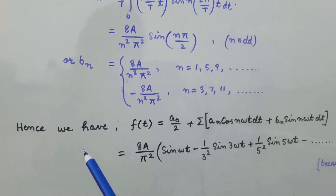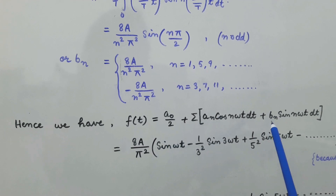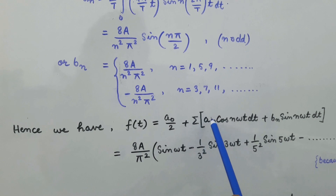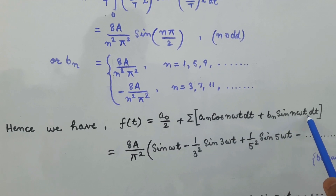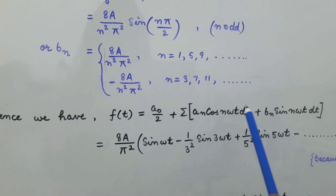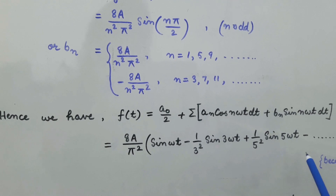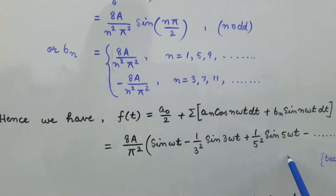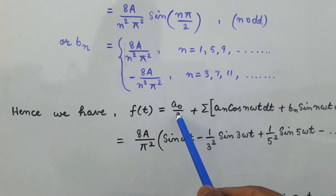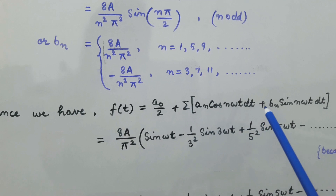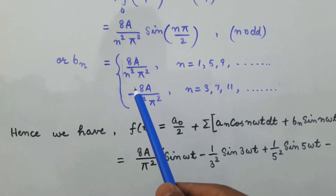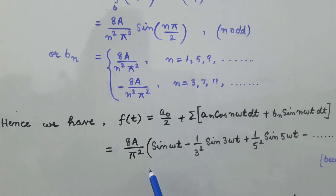Now substituting the values of all the coefficients — a_0/2, a_n, and b_n — in the general Fourier series expansion f(t) = a_0/2 + Σ [a_n cos(nωt) + b_n sin(nωt)], we find that a_0/2 is 0, a_n is also 0, so we only need to substitute the value of b_n that we have found into this equation.